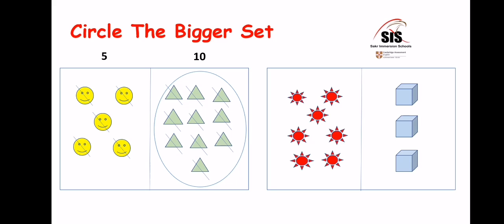Count the first set: one, two, three, four, five, six, seven. Write seven above this set. Now count the second one: one, two, three. Write three above it.